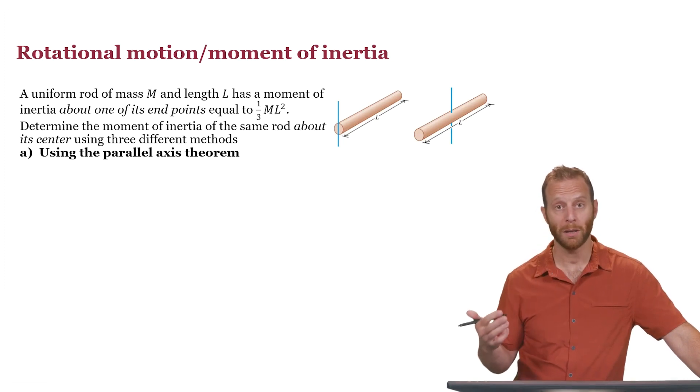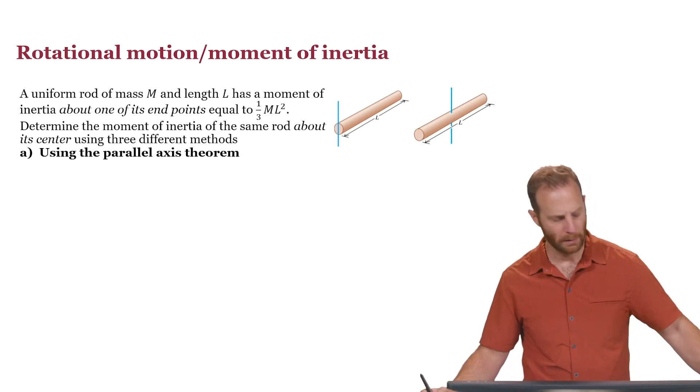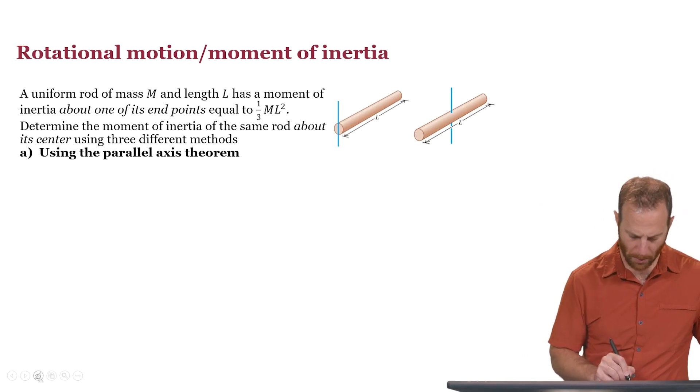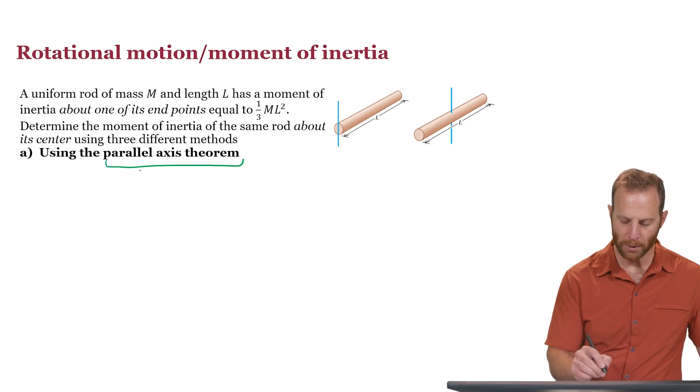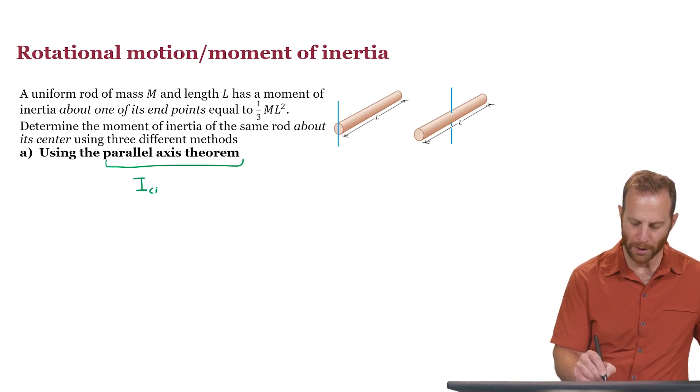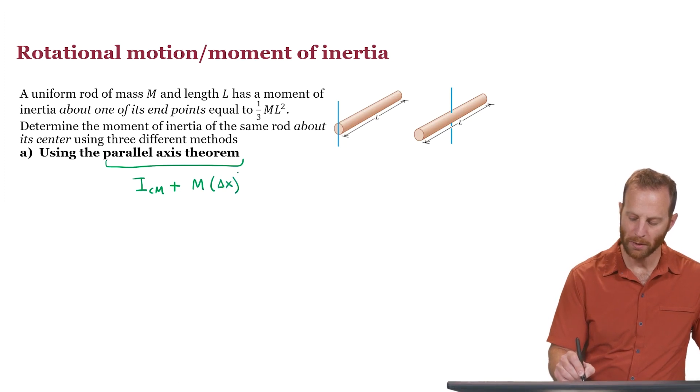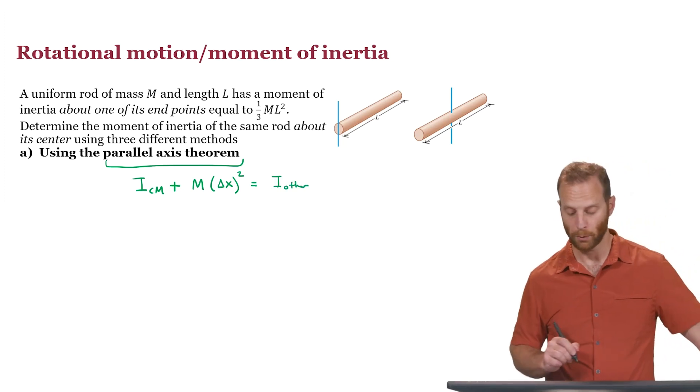First of all, we can do this using the parallel axis theorem. Let's remind ourselves what this theorem is about. Parallel axis theorem is a theorem that relates the moment of inertia about an object's center of mass plus the mass of the object, and if we multiply that times the displacement squared, that will give us the moment of inertia around some other axis of rotation.